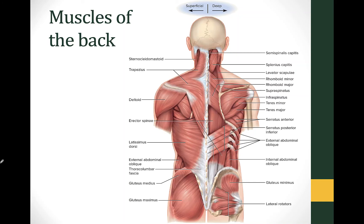Now let's move on to the muscles of the back. On the left you can see the shallow superficial muscles, and on the right those are cut away to show the deeper muscles underneath. One of the main muscles of the back is the erector spinae, which has portions originating up on the mastoid process of the skull and running all the way down, inserting on the vertebrae along the back.